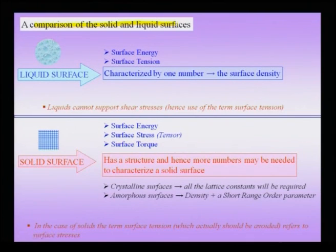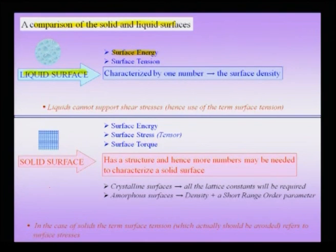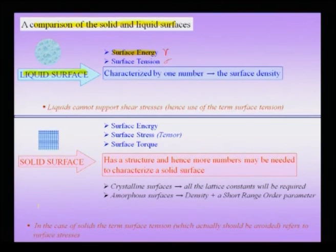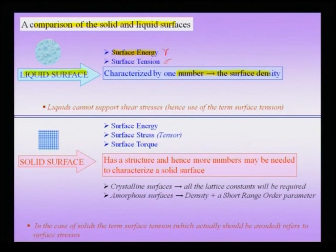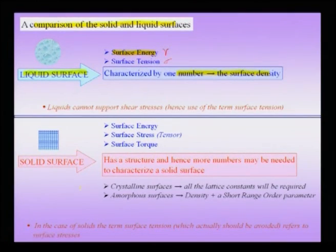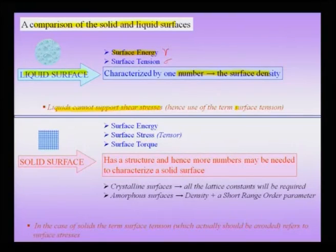When I want to characterize the liquid surface, I need to specify the surface energy gamma, the surface tension sigma, and the surface structure is characterized by one number which is the surface density — the number of atoms per unit area sitting on the surface. It is easy to characterize a liquid surface because surface energy and surface tension represent equivalent concepts, and I just need one parameter, my surface density. This comes from the fact that liquid surfaces cannot support shear stresses — if I apply shear on a surface, the material will flow.